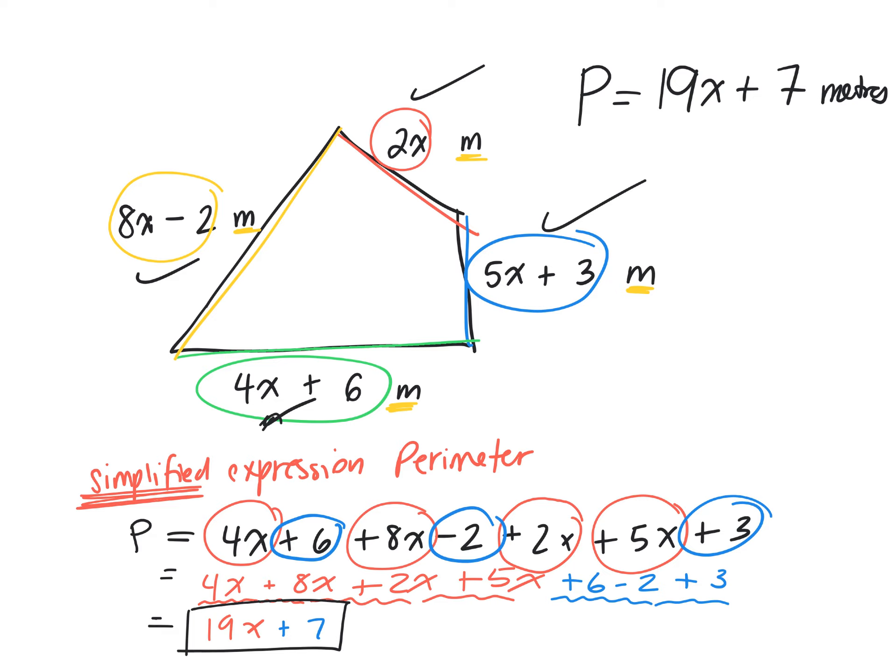So, there's a part 2 to this. If, remember we talked about this last week, if x is equal to, give me a number. 1. No. 7. If x is equal to 7 meters, what is the actual perimeter?